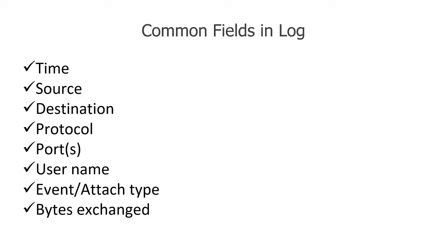When you look at a log, what are the common fields you see in each log? This is conditional because log formats differ depending on whether it's from Linux, Windows, Network, Apache, Tomcat, or a custom application. The format may differ, but some common fields you may get in each line of the log are: time, source, destination, protocol, ports, username, events, and so on.